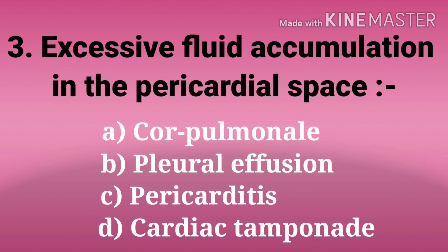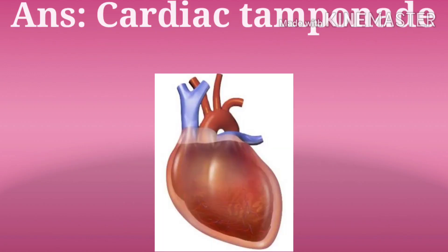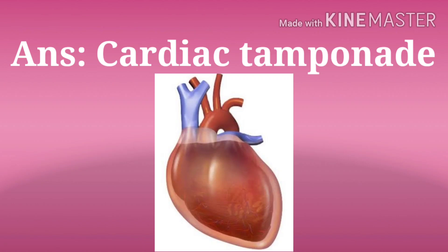Third question: excessive fluid accumulation in the pericardial space. The options are cor pulmonale, pleural effusion, pericarditis, and cardiac tamponade. And the answer is cardiac tamponade. Excessive fluid accumulation in the pericardial space is cardiac tamponade.